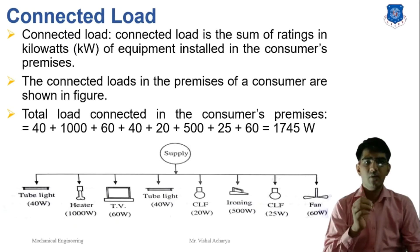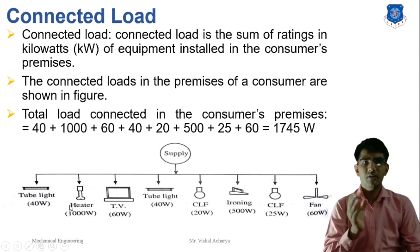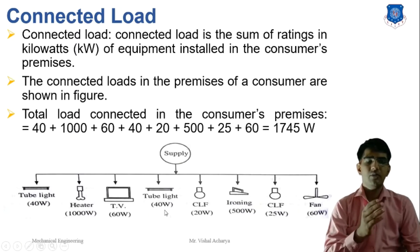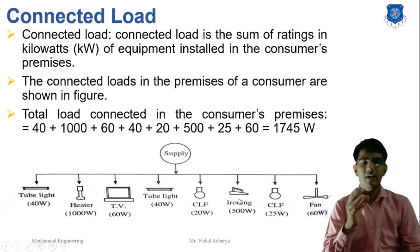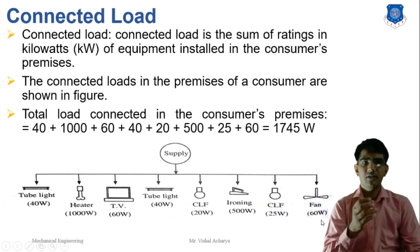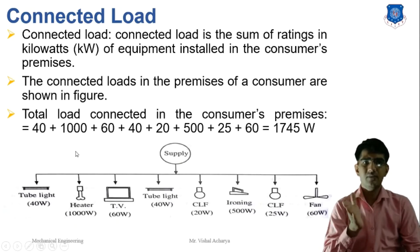For example, in a given premises: one tube light 40 watt, heater 1000 watt, TV 60 watt, tube light 40 watt, CFL 20 watt, iron 500 watt, CFL 25 watt, and fan 60 watt. The connected load for this premises is given by these values.